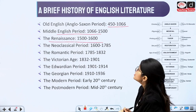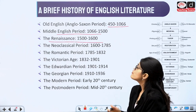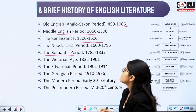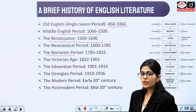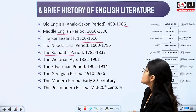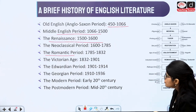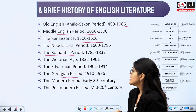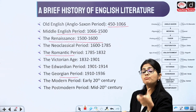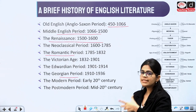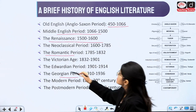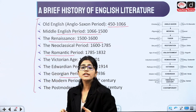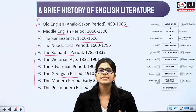Then we have the Neo-Classical period, the Romantic period, the Victorian age, the Edwardian age, the Georgian period, the Modern period, and the Postmodern period. The entire British literature needs to be studied according to these periods.